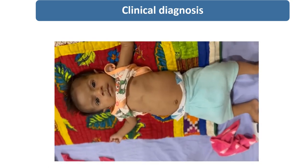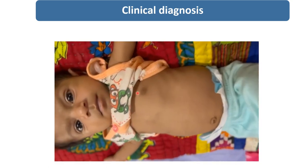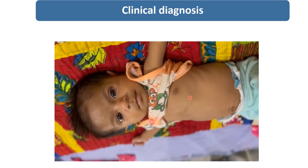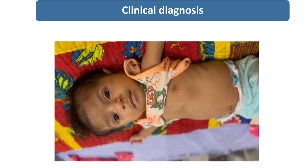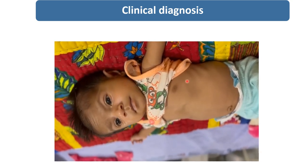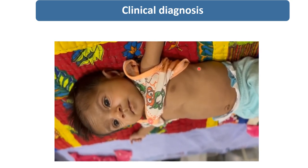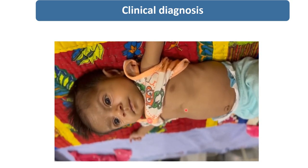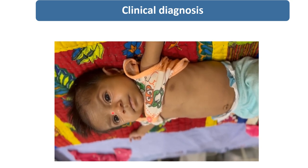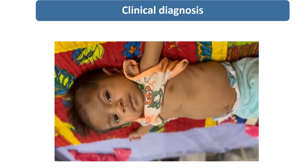In this video, you can see a three-month-old male child having the signs of respiratory distress. These are the intercostal retraction, subcostal retraction, and alar nasi flaring present.